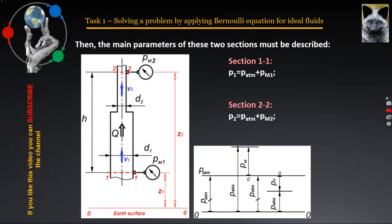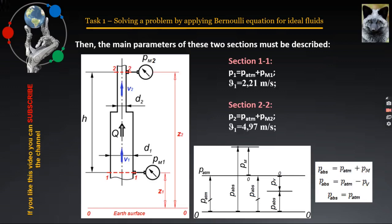The two velocities, V1, 2.21 meters per second, and V2, 4.97 meters per second, respectively, which have already been calculated in the implementation of step 1, are indicated.